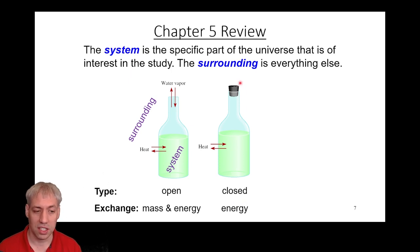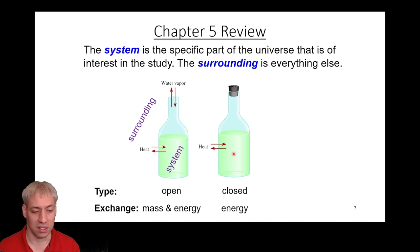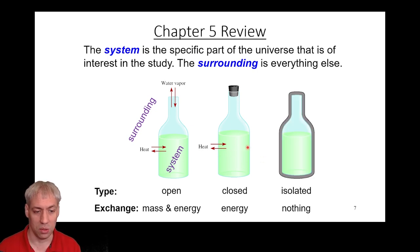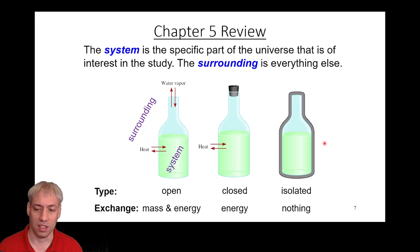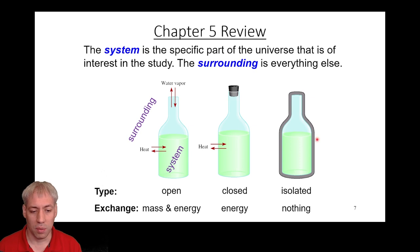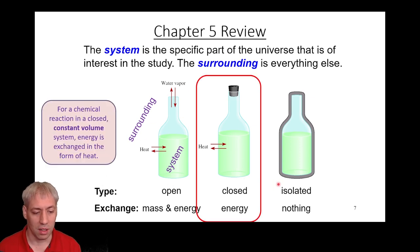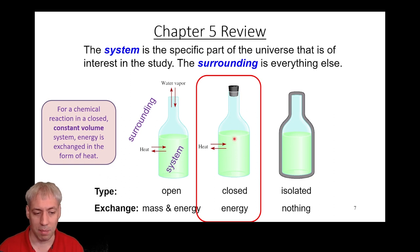A closed system doesn't exchange matter — no atoms are moving in and out — but heat can be exchanged. You can feel warmth from a closed bottle; that's energy transferring to your hand. Heat can be exchanged but not matter — that's a closed system. You can also have an isolated system, at least theoretically, where neither energy nor mass is exchanged. You try to do this with calorimetry, though it's physically impossible; you can describe the entire universe as an isolated system.